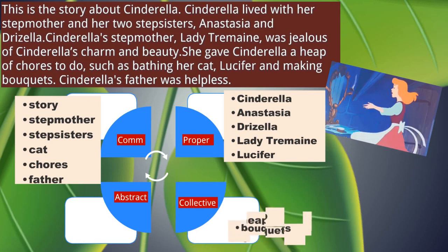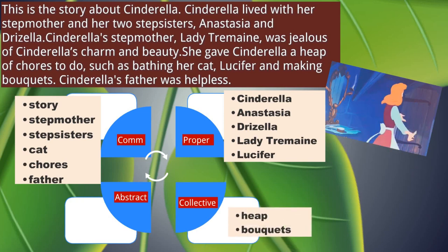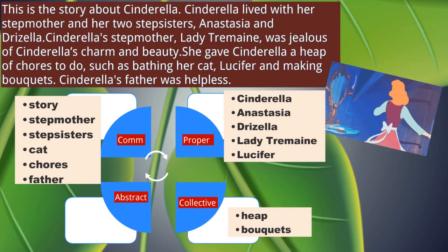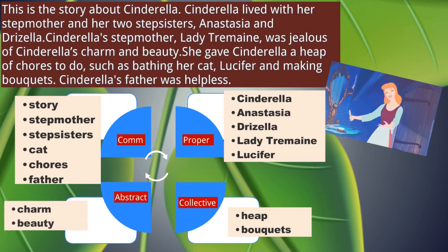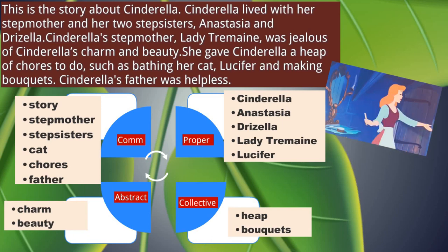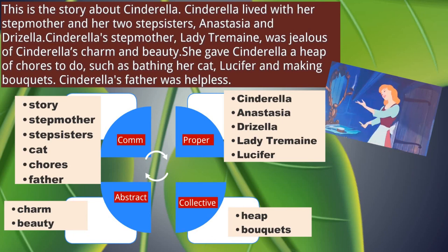Next we go on to see what are the collective nouns in this passage. Collective nouns are heap and bouquets because they are a collection of things. Similarly, the herd of cattle, the fleet of ships — these are all collective nouns. And in this passage we have abstract nouns such as charm and beauty. Abstract nouns are intangible things, or things which we cannot touch or see but they are experienced. So happiness, joy, strength, wisdom — these are all abstract nouns.